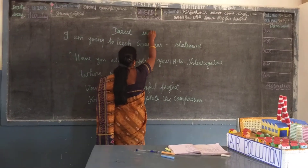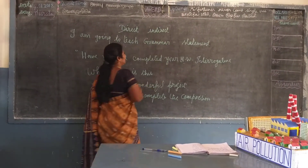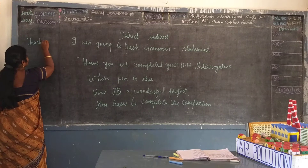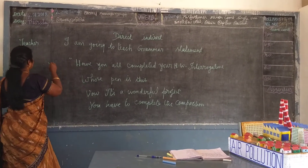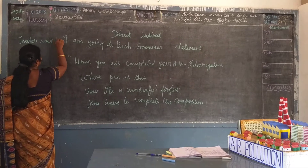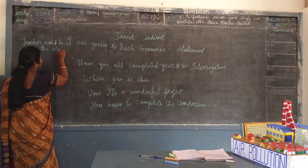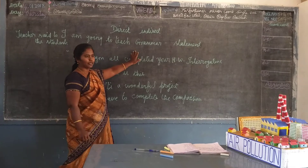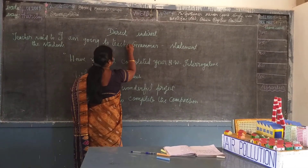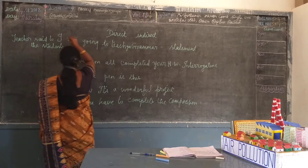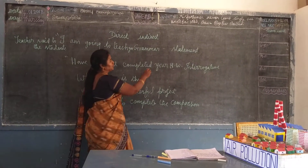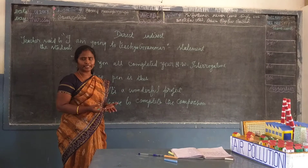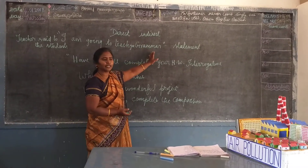Direct. Indirect. Now, who said this to whom? The teacher said to the students. These are all in direct. I am going to teach grammar. I am going to teach you grammar. These are all direct, so I am putting this into inverted commas. Whatever is said directly to that person must be in inverted commas. Understand?